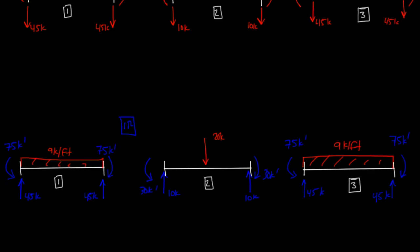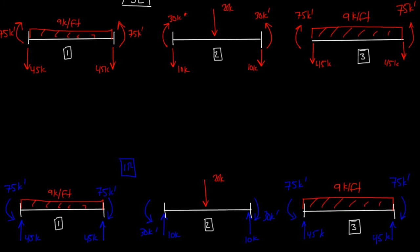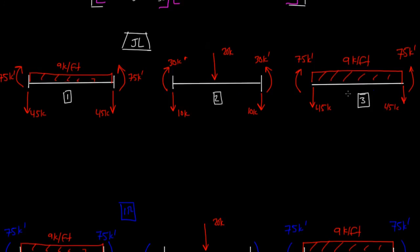Welcome back. In the last video we came up with the joint load diagram and the internal reaction diagram. In this video we're going to look at the joint load diagram and use it to come up with our JL complete matrix. Our JL complete matrix is comprised of two different matrices: JL unrestrained and JL restrained.